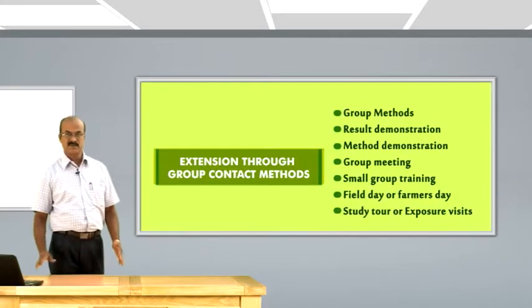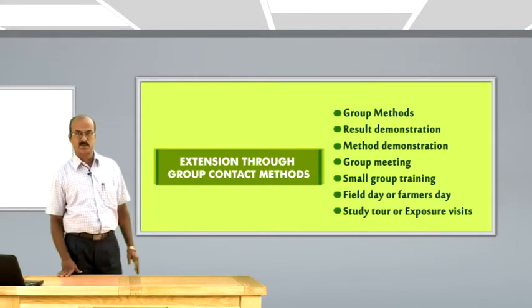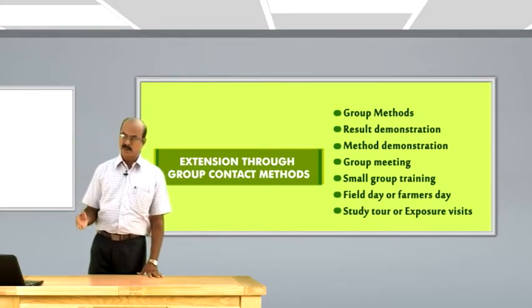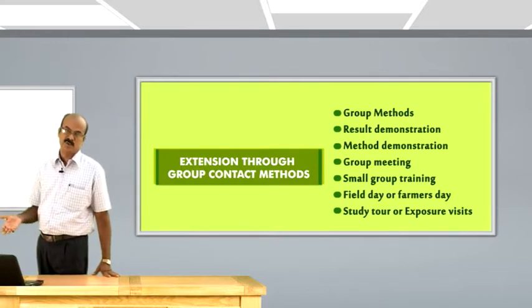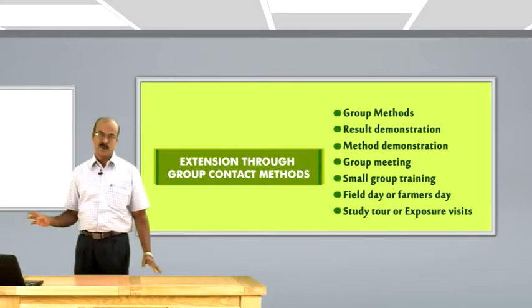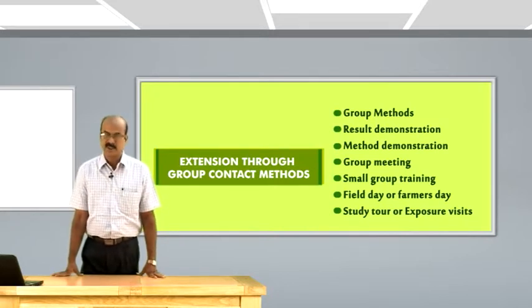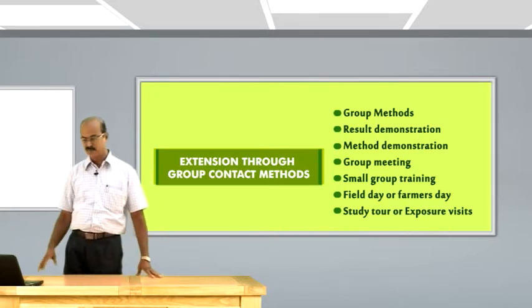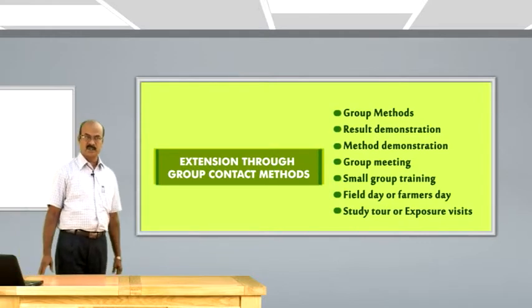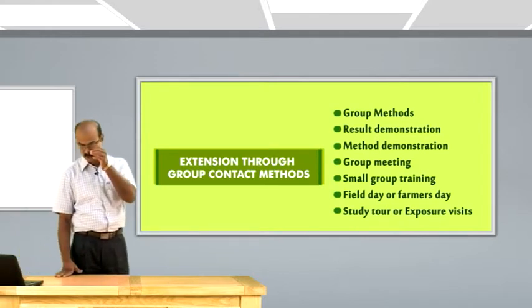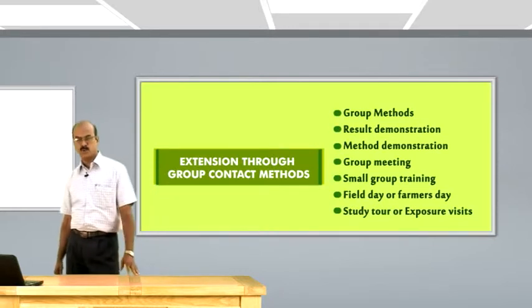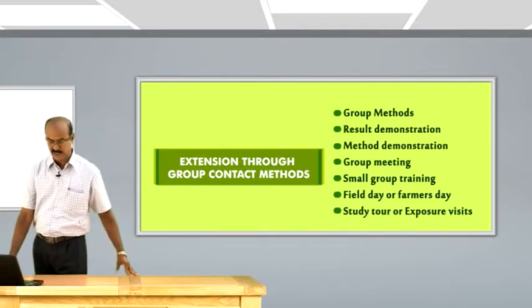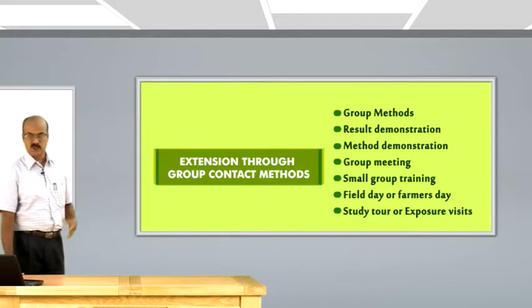The second method is the group method. Group size may extend up to 50 numbers, including small groups of up to 15, medium groups of 15 to 30, and large groups up to 50. Under group methods, different techniques are used: result demonstration, method demonstration, group meetings, small group training, field day or farmers' day, and study tour or exposure visits.